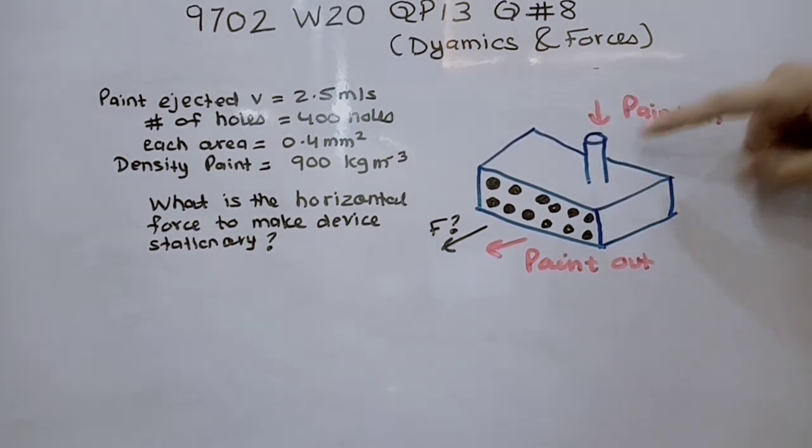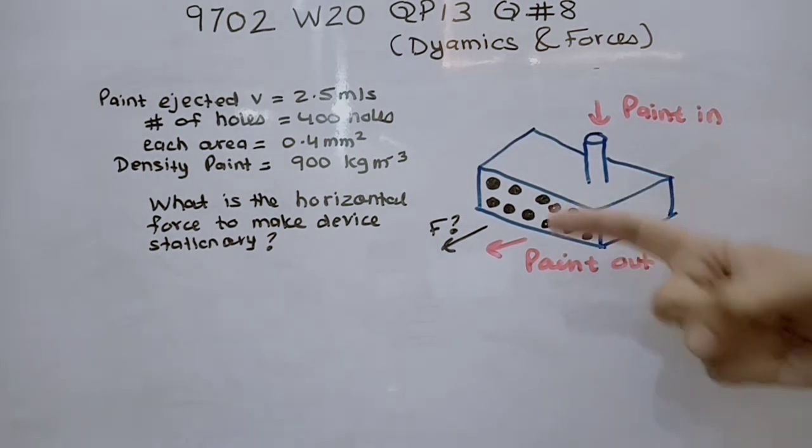This is a box, this is a vertical tube, paint is fed into this box and exits through holes as fine streams moving horizontally and it moves through these horizontal streams which are the exit for the paint.